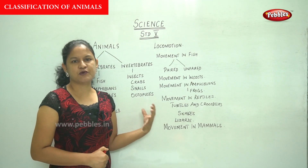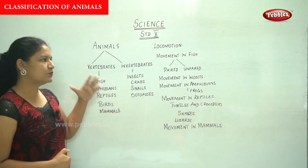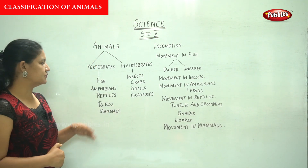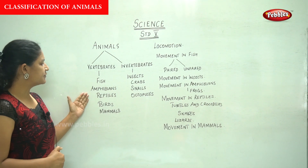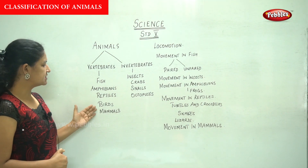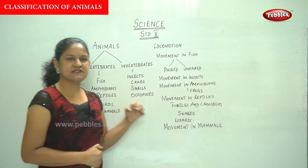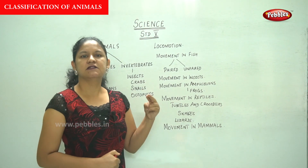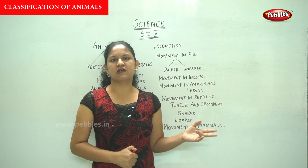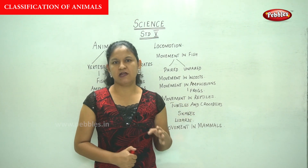Vertebrates are further classified into fish, amphibians, reptiles, birds, and mammals. So the animal kingdom is divided into two groups based on the presence or absence of backbone: vertebrates and invertebrates.